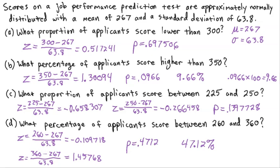I think that's some pretty good practice. Hopefully by now you've got a good handle on using the normal distribution, calculating Z-scores, and using the NumWorks calculator to find p-values.